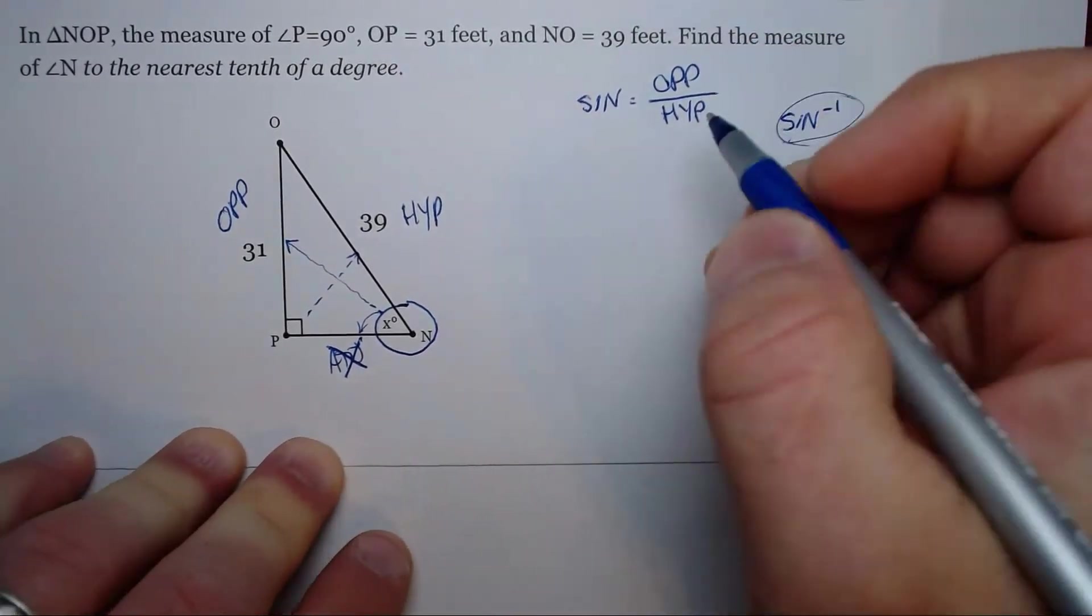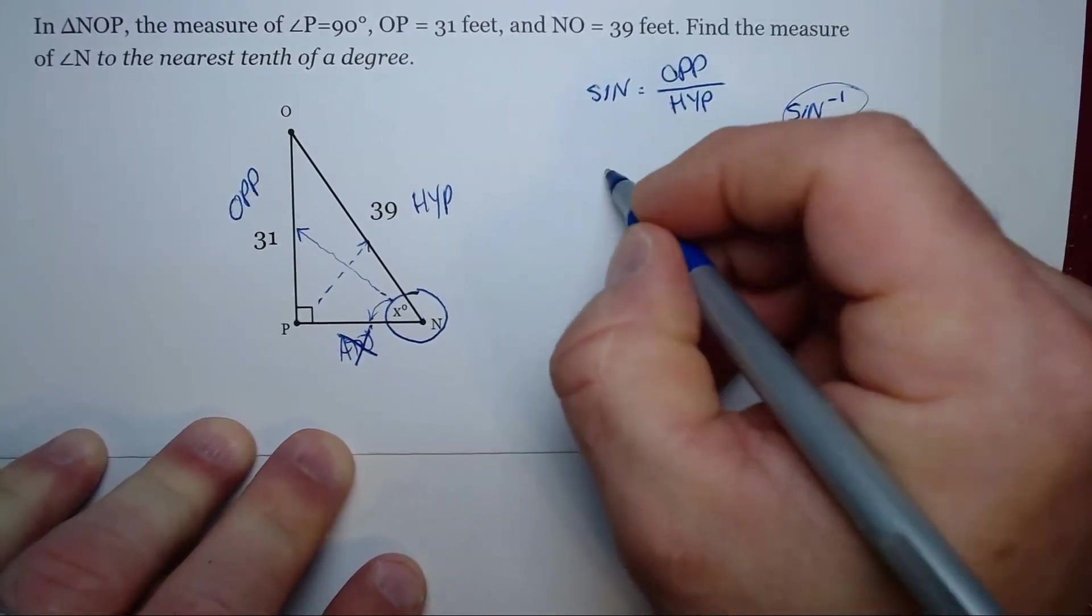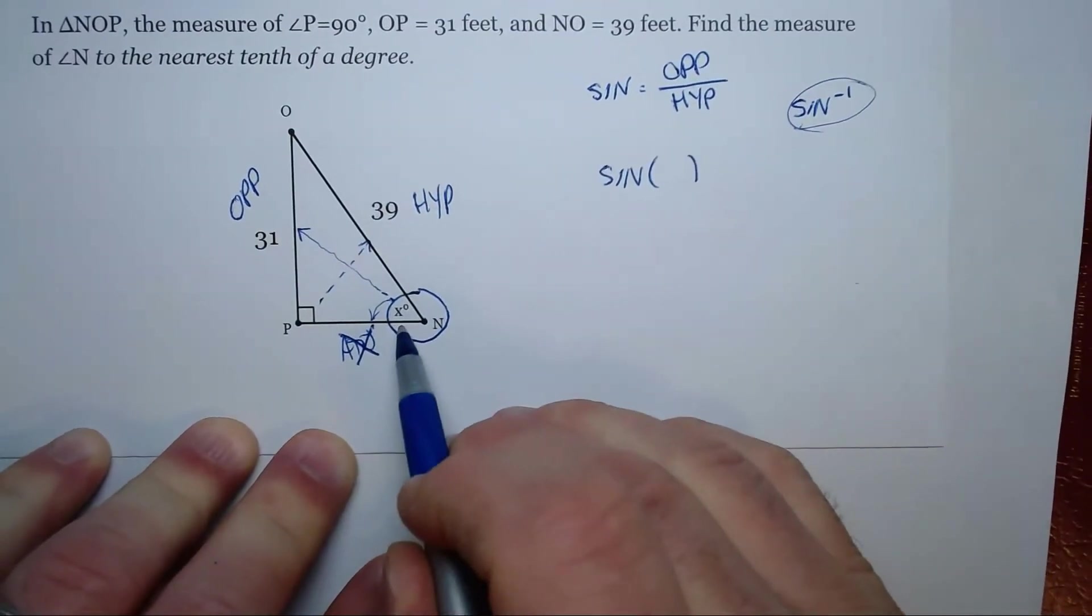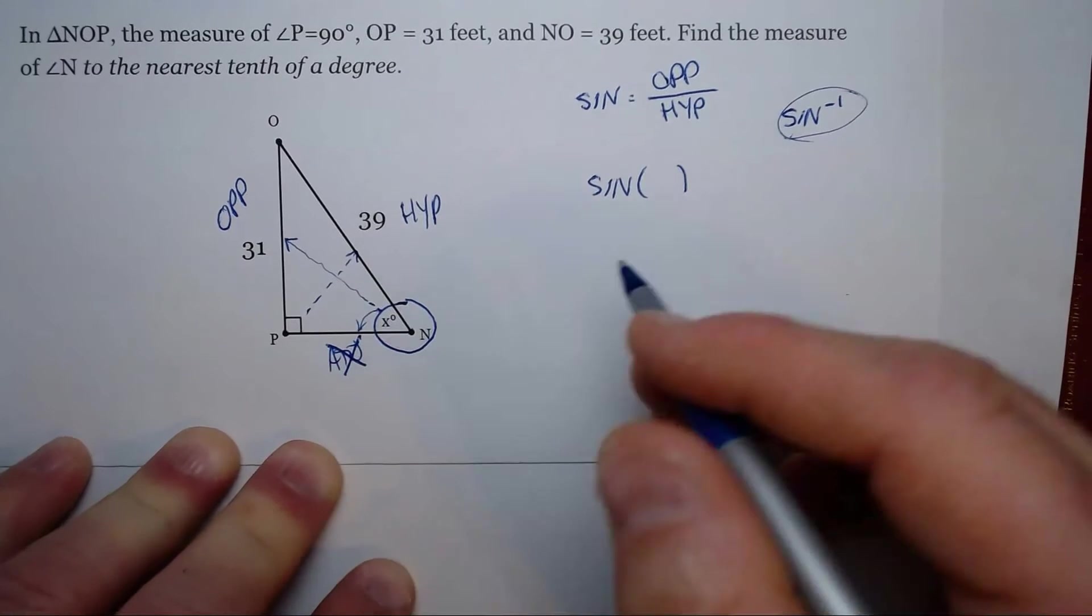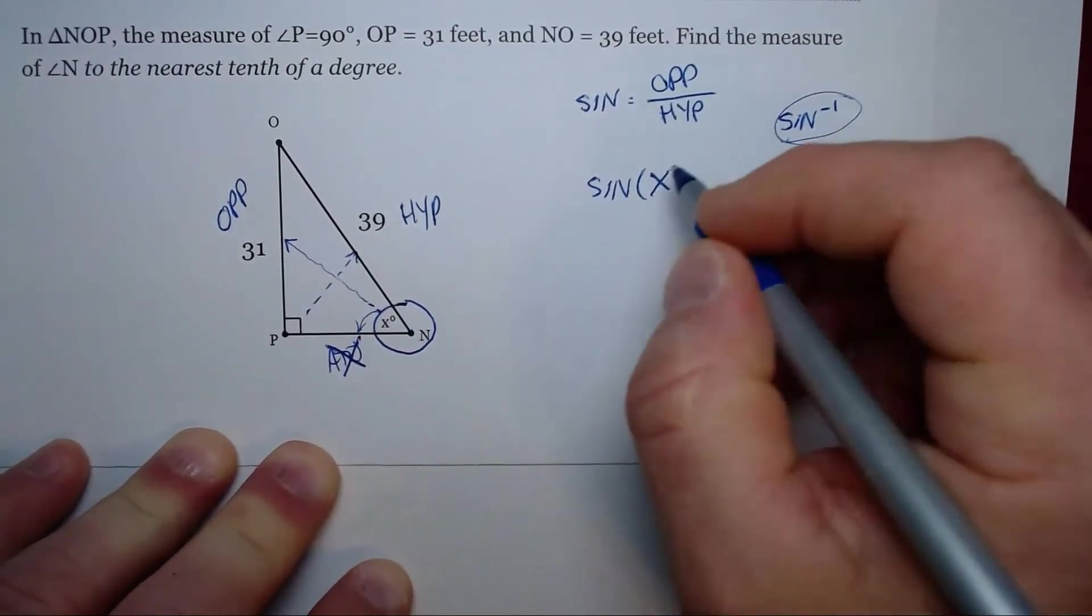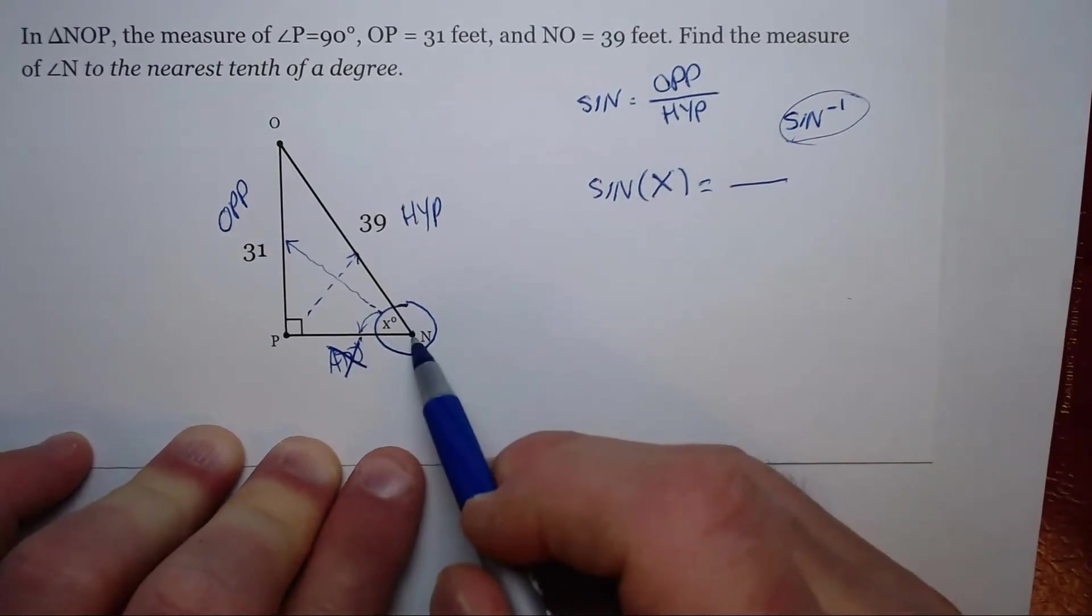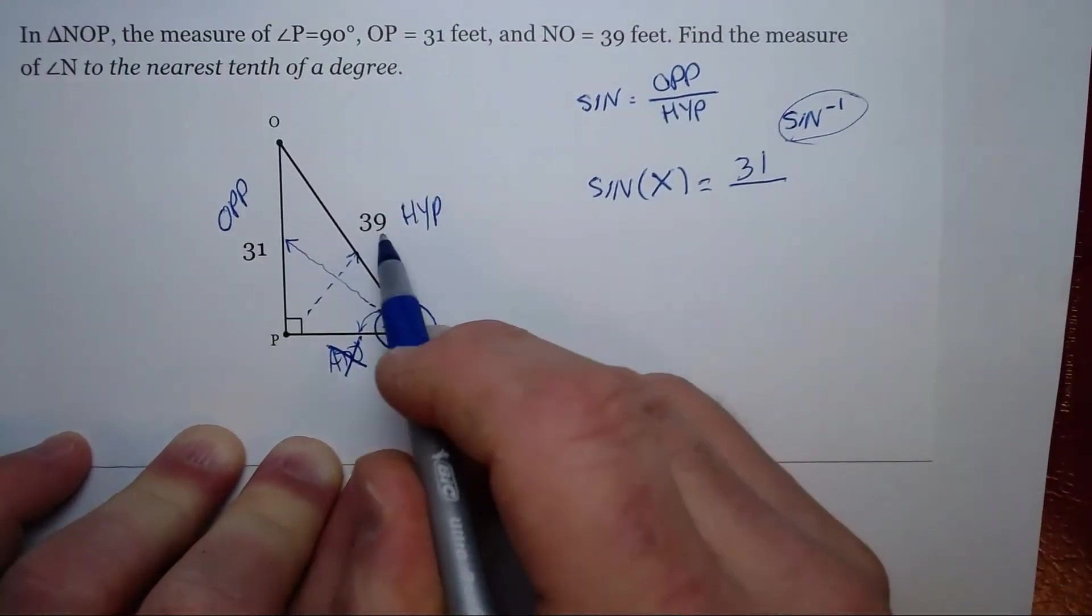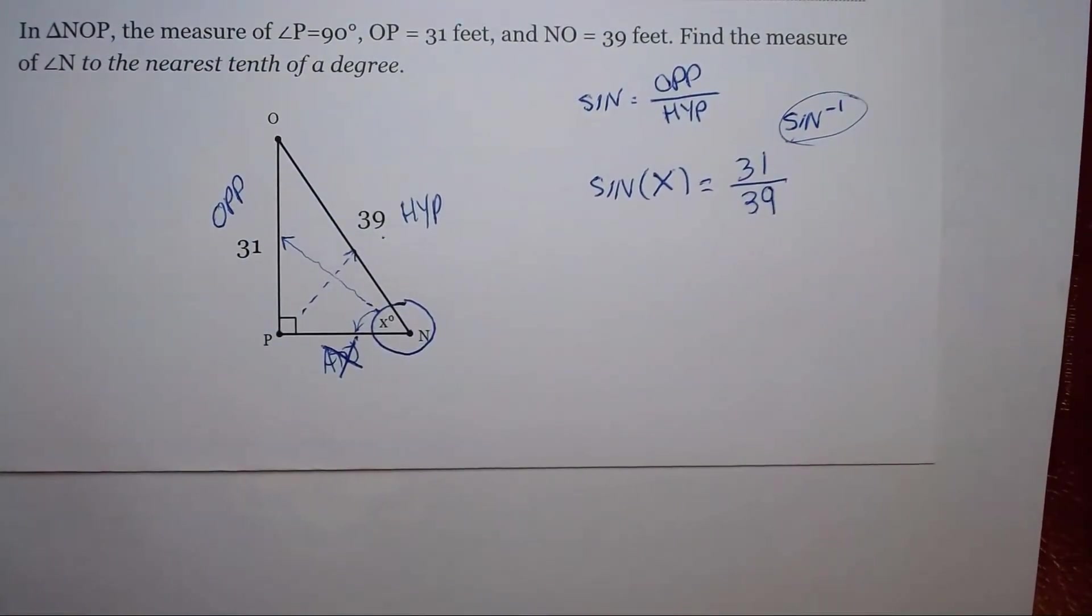Let's first set up our equation like we've been doing. We're using sine and we write our equation sine of some angle. We usually have a number here, but now we just have an X because we don't know the angle. Sine of some angle X equals the opposite side of 31 over the hypotenuse of 39. There's our equation.